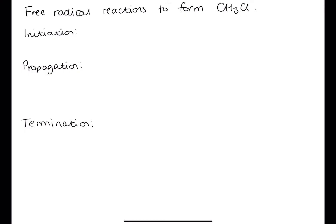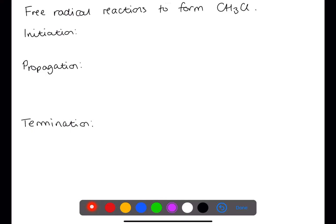Hi and welcome back to my channel. Today we're going to look at practicing writing free radical reactions. Here is a basic free radical reaction to form chloromethane. First of all, we have the initiation step. This usually involves a halogen which will split into radicals by the process of UV light.